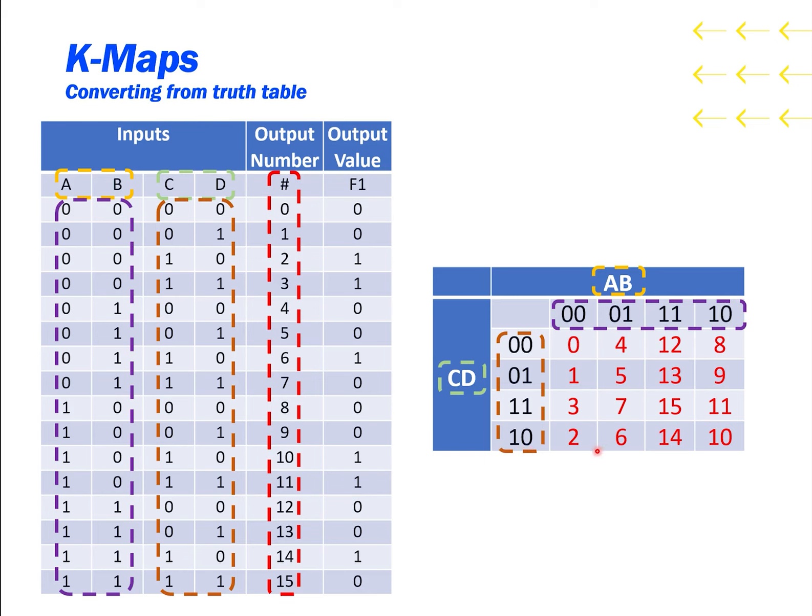Of course, normally you don't put the output numbers on a truth table, and you don't put them on a K-map. Instead, you just put the output value. And here we can see all of the output values in the proper spaces.